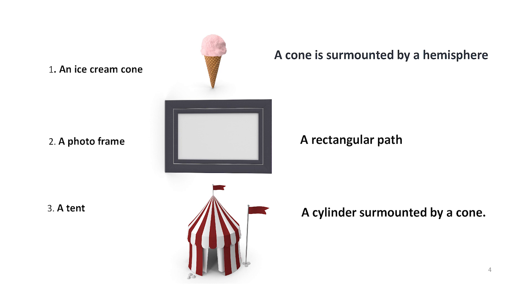The next example is a photo frame. This can be compared to a rectangular path. The next example is a tent. A tent is a cylinder surmounted by a cone.